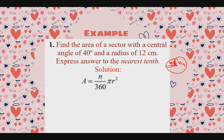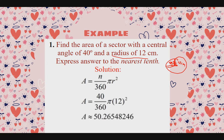Solution. The general formula is: Area = (N/360) × pi × r squared. Our central angle N = 40 degrees, so we have 40 over 360, times pi, times 12 squared. Simplifying 40 over 360 to lowest terms gives 1 over 9, and 12 squared is 144. So we get: (1/9) × pi × 144.